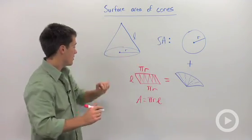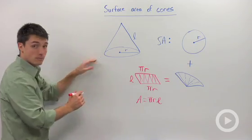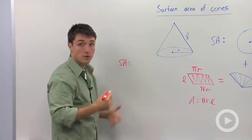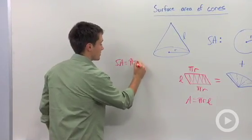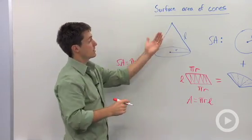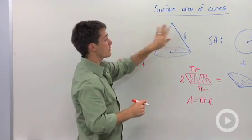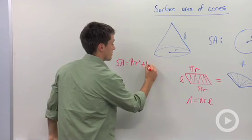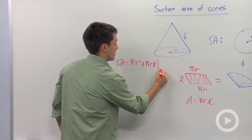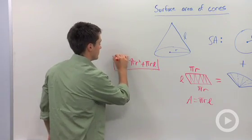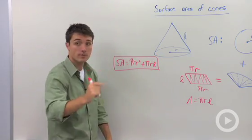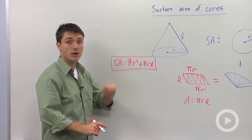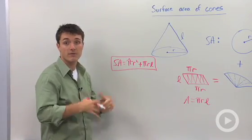So the surface area of a cone is equal to the base pi R squared, plus this lateral area, which is found using your slant height — that's pi times R times L. So you only need to know two dimensions, the radius and the slant height, and you can calculate the surface area of any cone.